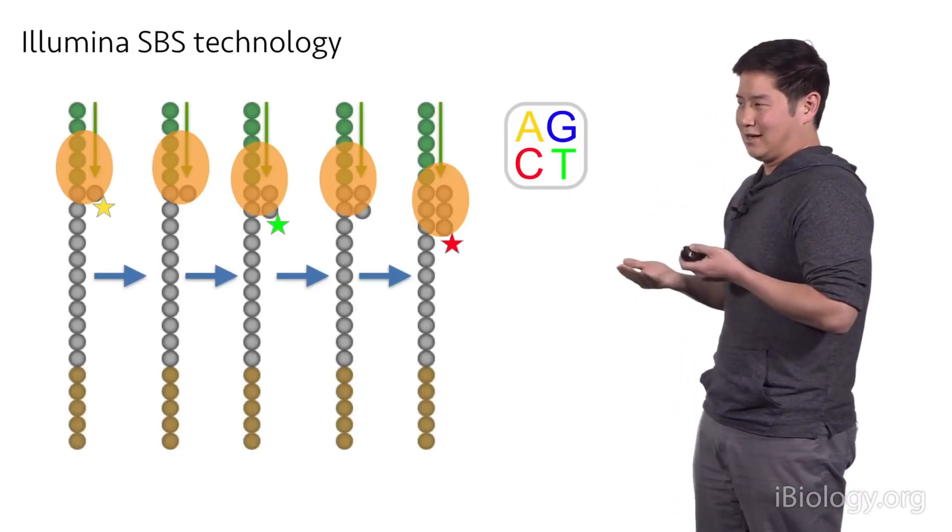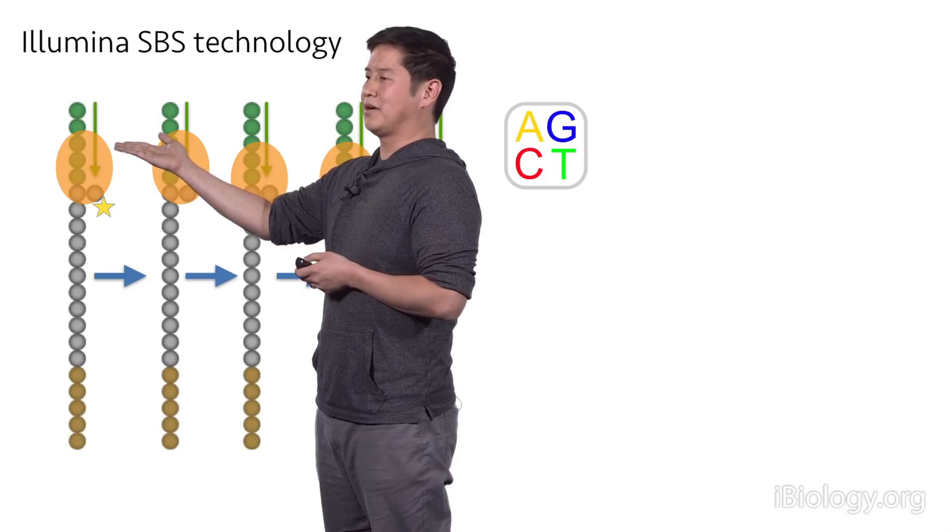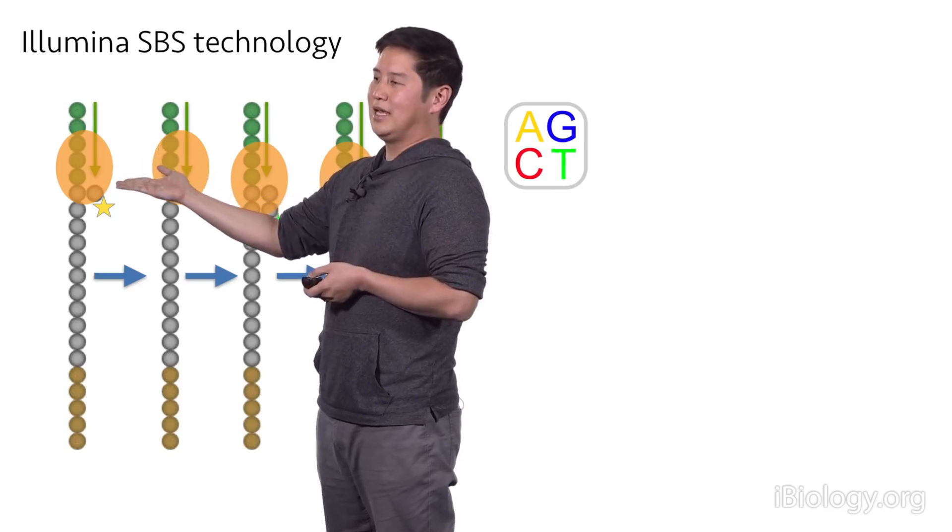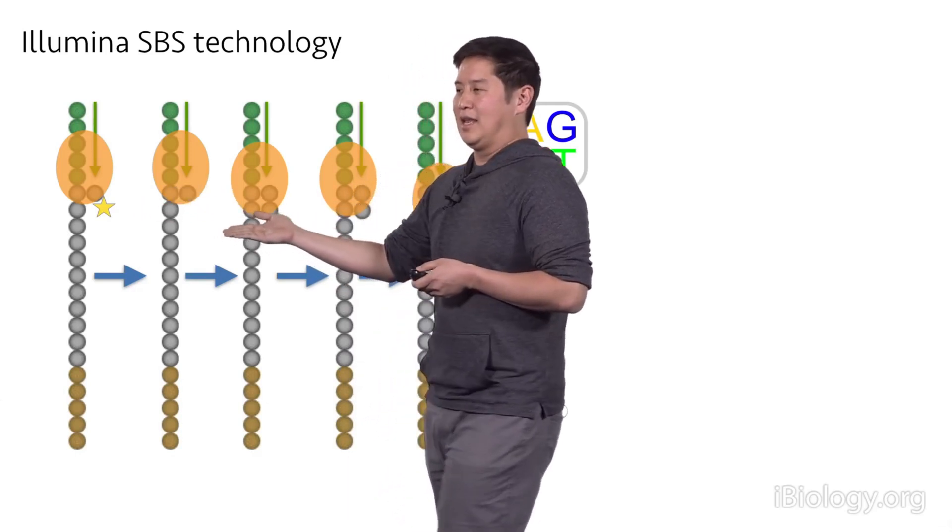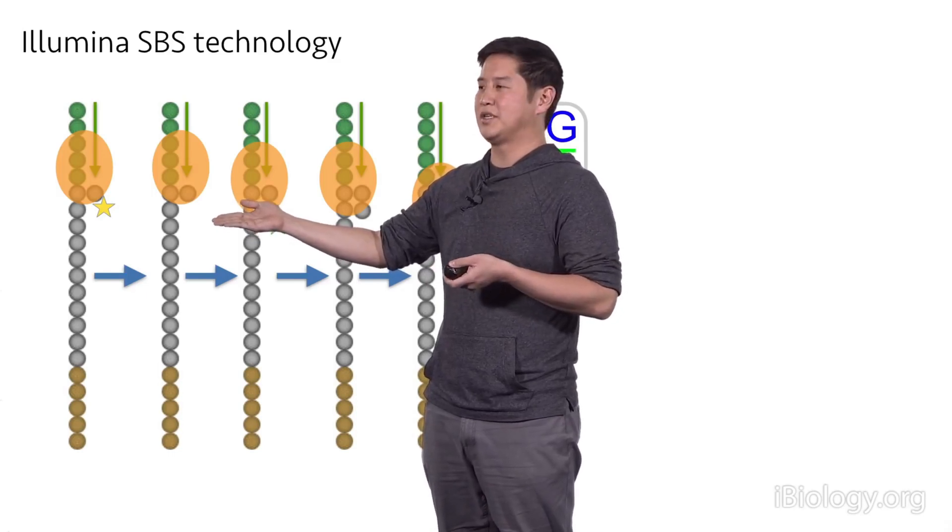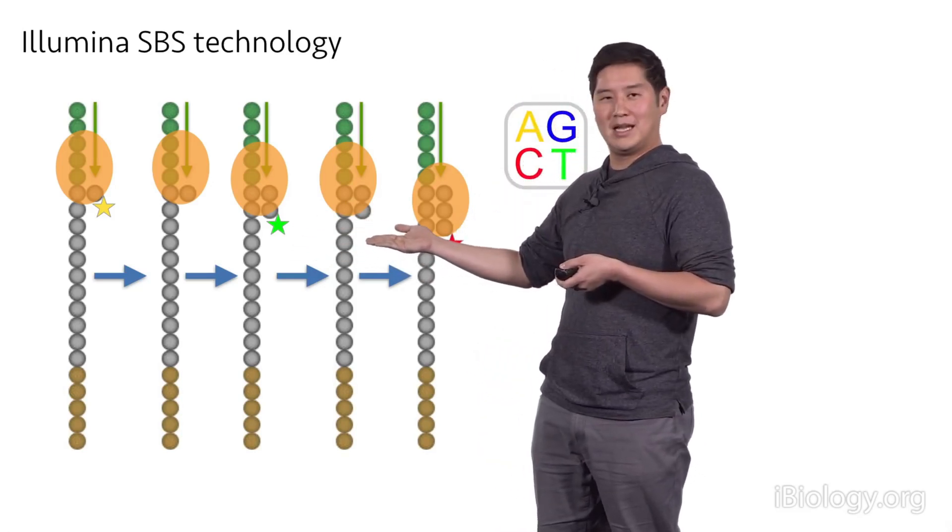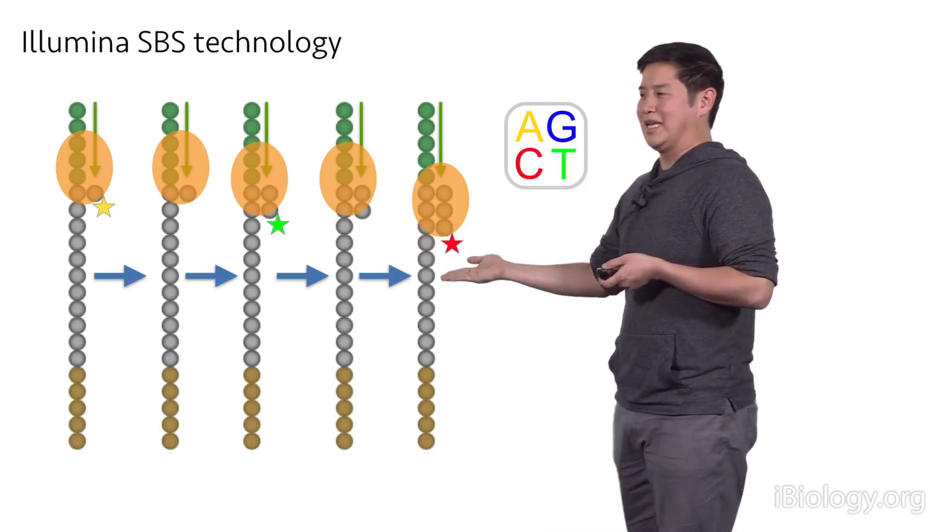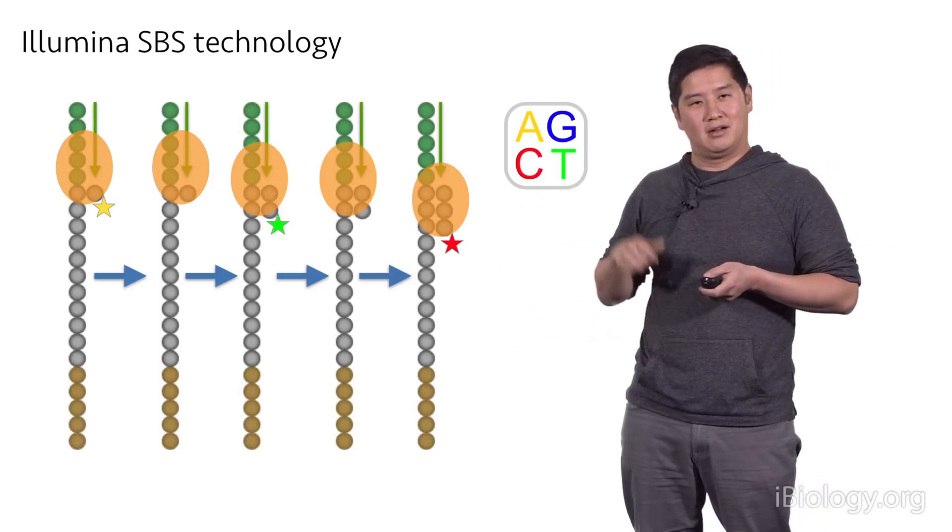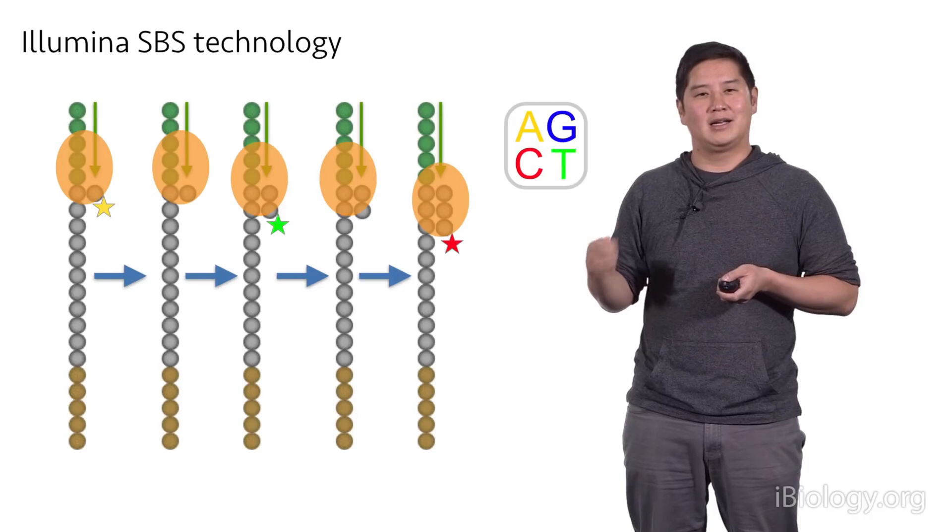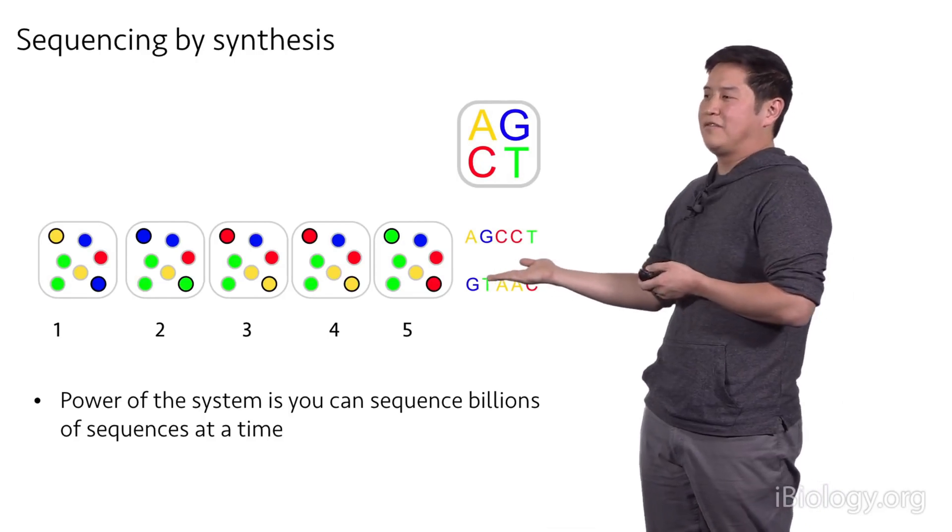And so this is what it looks like for a single molecule. On this end over here, we have our template strand bound to a sequencing primer. And this allows DNA polymerase to bind and then add a base. In this case, it's a yellow one. So once this gets added, a picture is taken. And then we add chemicals to remove the fluorescent group and the terminator so that DNA polymerase can add a second base. An image is taken. Chemistry is performed to remove that base and to regenerate the three prime hydroxyl. And then we can add another base. And so over time, the cycle just repeats over and over again with multiple cycles of a base addition, imaging, and then chemistry to remove the blocks.